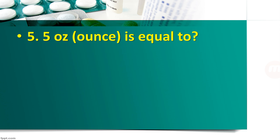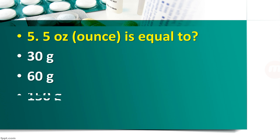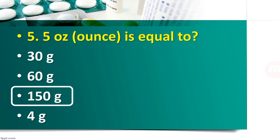Question number 5: 5 ounce is equal to — 30 gram, 60 gram, 150 gram, or 4 gram? The right answer is 150 gram. 1 ounce is equal to 30 gram, so for 5 ounces: 30 into 5 is equal to 150 gram.